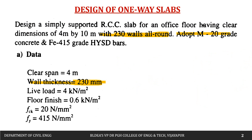Adopt M20 grade of concrete, so fck = 20 N/mm², and Fe415 grade HYSD bars. For an office floor, we take a live load of 4 kN/m² and a floor finish of 0.6 kN/m². The shorter span is 4 meters.